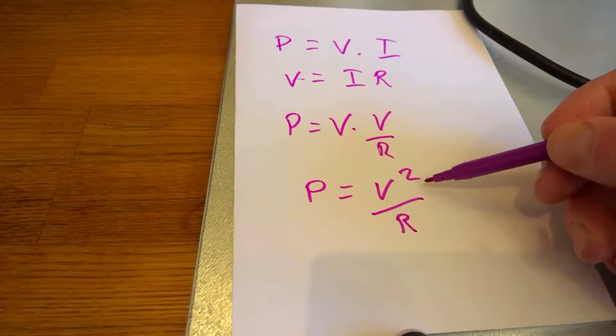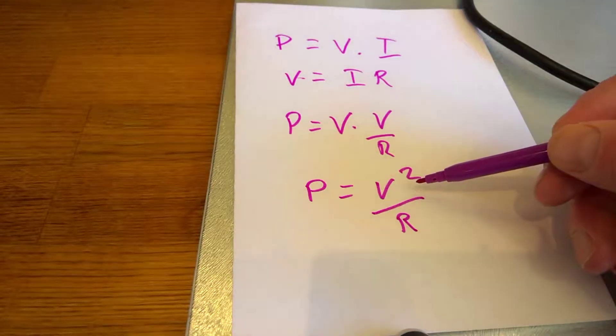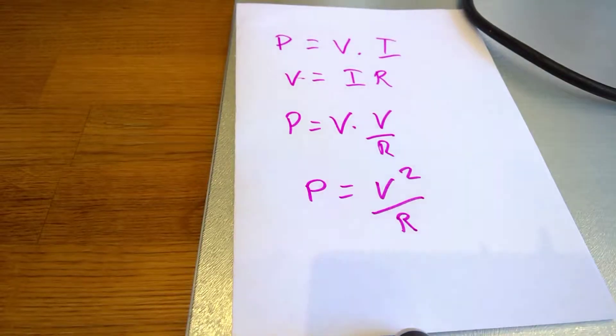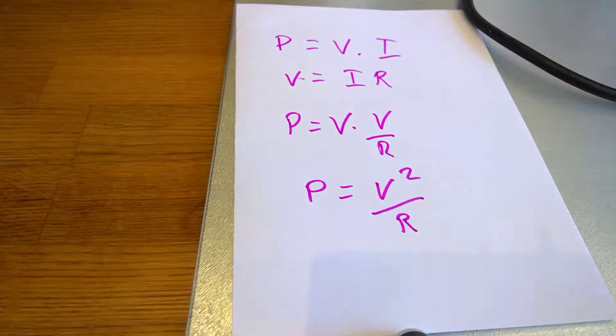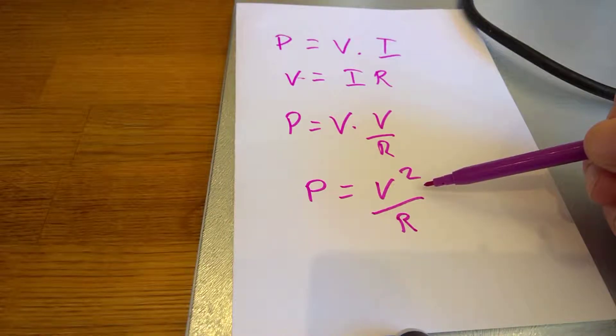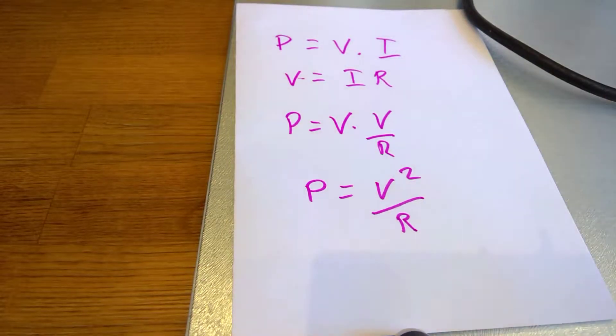So you can see as the voltage is increased, the power goes up as a square of the voltage. So by reducing the voltage that's applied to the 3-in-1 grill, we'll actually be reducing the power substantially.